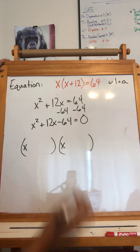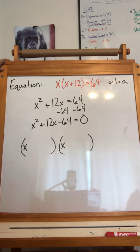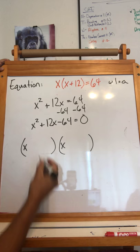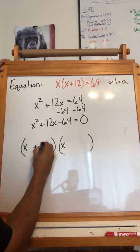Now, my numbers have to add up to positive 12. One has to be positive, one has to be negative, and that's the key. So my positive number could be 16.